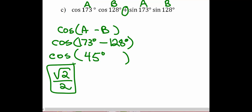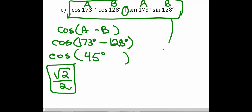We know that cosine of 45 degrees is √2/2. So we can also use the cosine identity in the other direction. If we have the pattern for the right side of that identity, we can convert it to the left side — writing the two angles back inside the input for cosine being subtracted — and simplify to cosine of 45 degrees, which we know is √2/2.